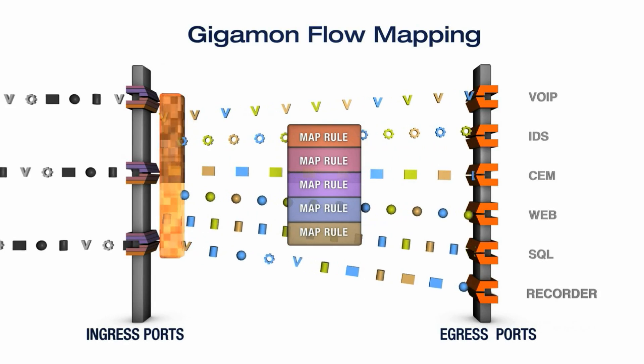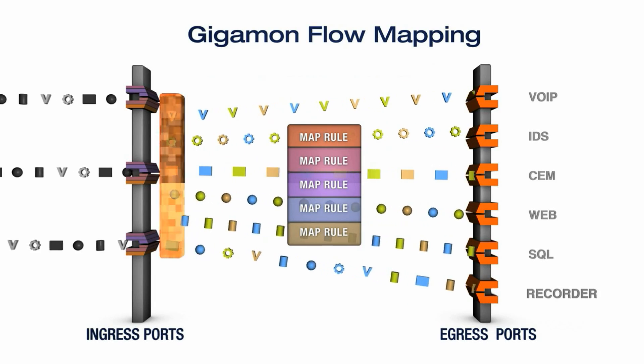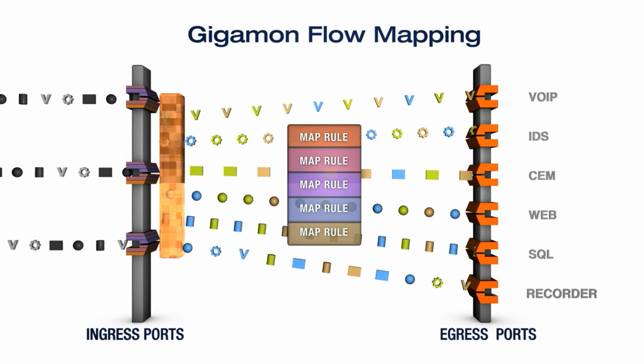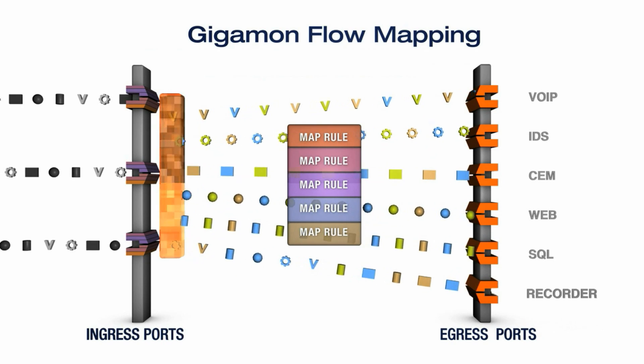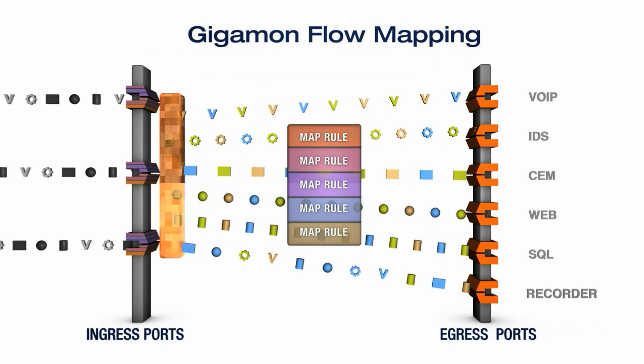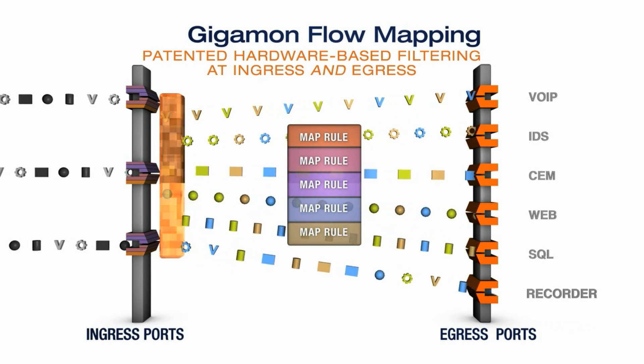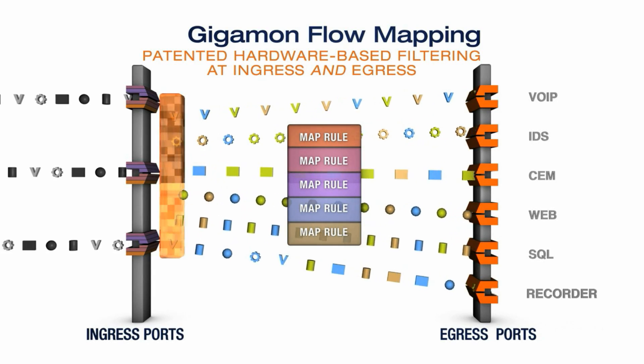If future changes become needed, users simply modify the map and all the associated network ports are automatically updated. For example, if a new tool comes online, the map is updated, allowing traffic to immediately be sent to that tool, eliminating the need to rewrite the entire filter sequence from scratch.